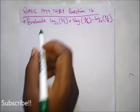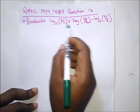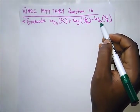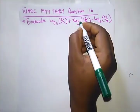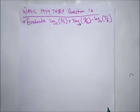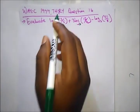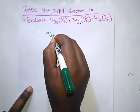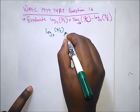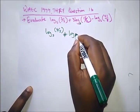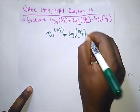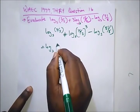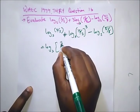Our next question is from WAEC 1999 theory question 1b. Evaluate log_5(3/5) + 3·log_5(15/2) − log_5(81/8). All in base 5. We simplify: using the power rule, 3·log_5(15/2) becomes log_5((15/2)^3), and log_5(81/8) can be written as log_5(1/8) adjusted accordingly.